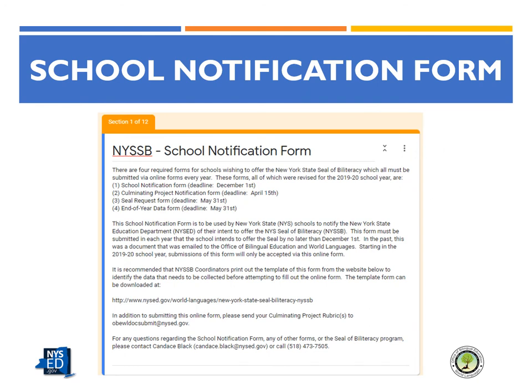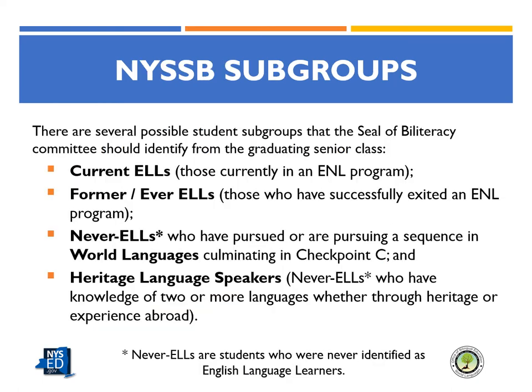Please take out the seal notification form template to review the data required to fill out this form. One of the first tasks of the Seal of Biliteracy Committee is to identify the subgroups of eligible seal candidates from the graduating senior class. These are: current ELLs, former or ever ELLs, never ELLs whose home language is English, and never ELLs whose home language is other than English.